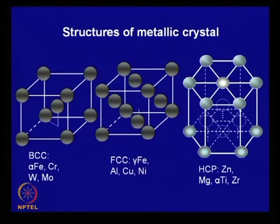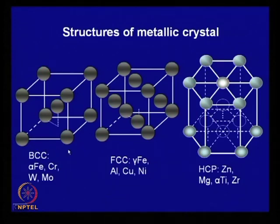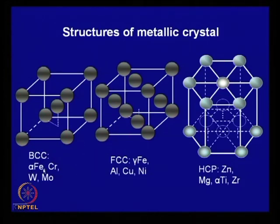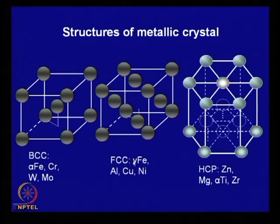Just to repeat: the three types of metallic crystals found primarily in metals. One is body-centered cubic (BCC). The atoms are shown at their positions and common metals with this structure include iron — specifically alpha iron, which is the form we get at room temperature — as well as chromium, tungsten, and molybdenum. The face-centered cubic (FCC) structure is found in gamma iron, aluminum, copper, and nickel. Gamma iron does not exist at room temperature; you get it at higher temperatures.